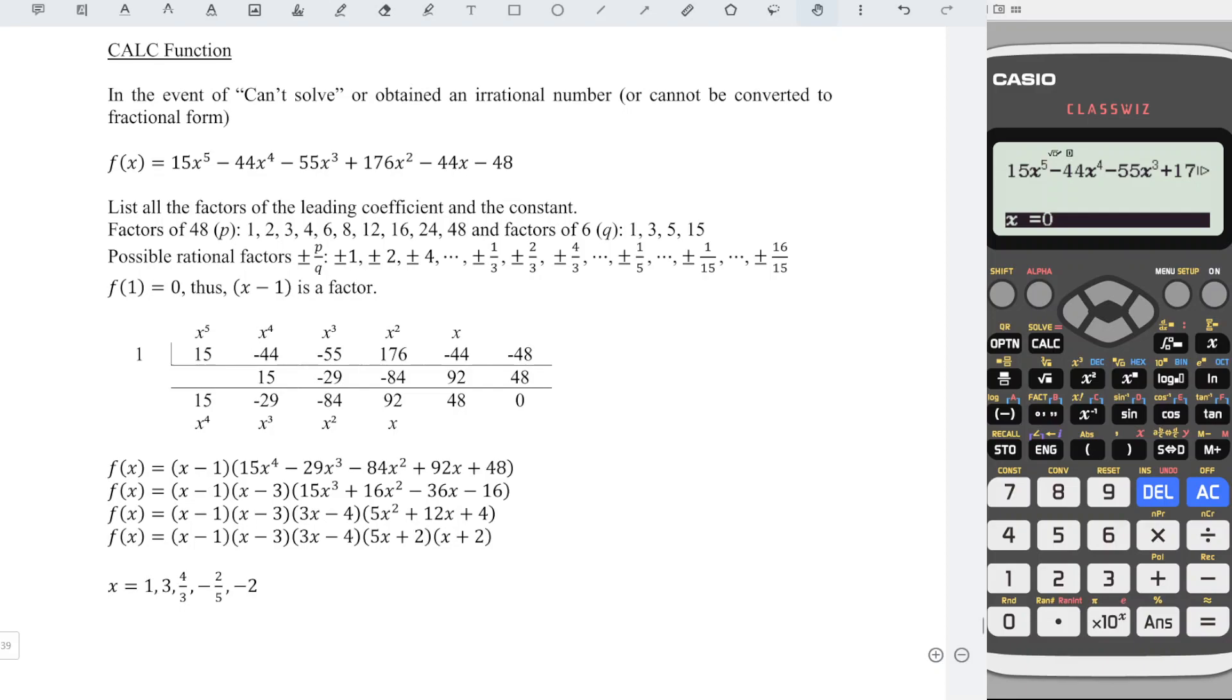4 might be a root. So we just have to enter 4 and press equal and equal again. If the result is not equal to 0, which means that x equal to 4 is not a root, then we have to try another number.